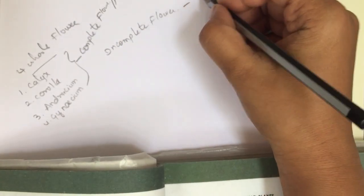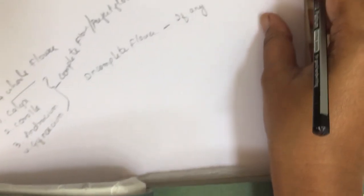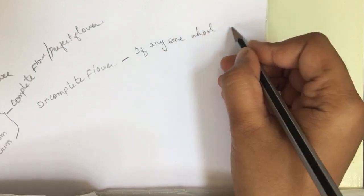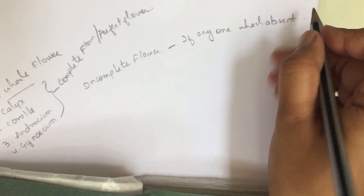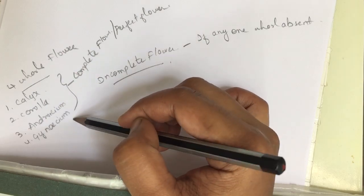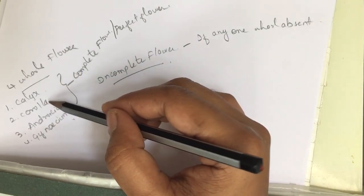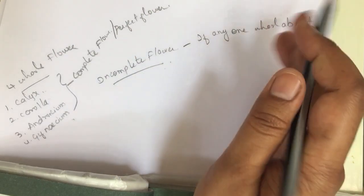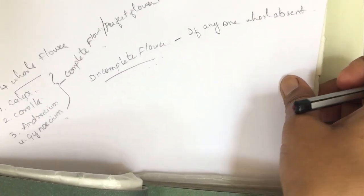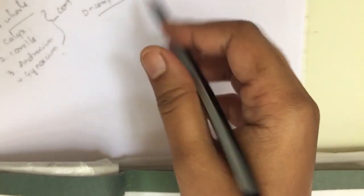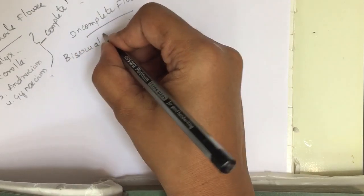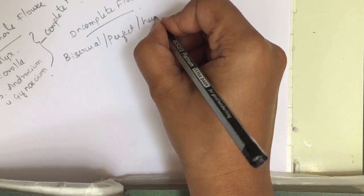An incomplete flower is one in which any one whorl is absent. For example, if calyx, corolla, and androecium are present but gynoecium is absent, it is an incomplete flower. Complete means all four whorls are present; incomplete means any one whorl is absent.